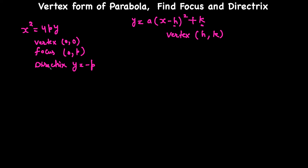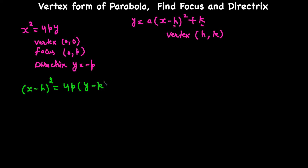Before we find the focus and directrix, let's write the equation of the parabola in vertex form in terms of P, because we need P to find the focus and directrix. Since the vertex is not (0,0) but at (H, K), the equation in terms of H and K can be written as (x - h)² = 4P(y - k).